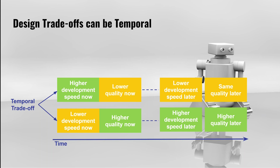Furthermore, design trade-offs can be temporal, meaning sometimes you have to make a trade-off between achieving a benefit now versus achieving a benefit later on. For instance, sometimes you may have to choose between development speed now versus development speed later. You might choose to have lower quality now to gain higher development speed now, with the consequence that development speed might drop later on. The alternative would be to keep quality high now with reduced development speed now, but with an expected higher development speed later because quality is still high at that point.